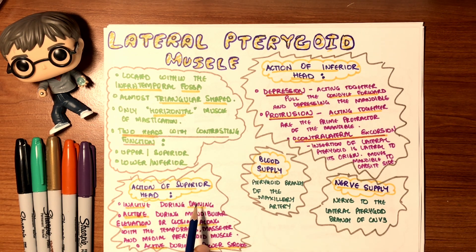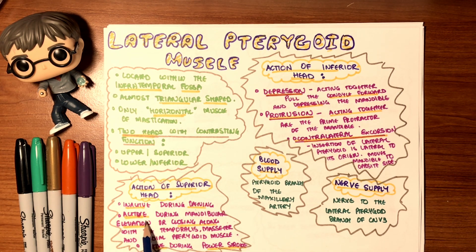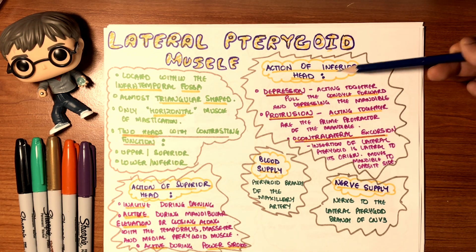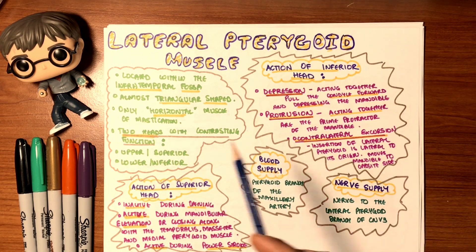The superior head is inactive during opening but active during mandibular elevation, working with temporalis, masseter, and medial pterygoid to close the mandible. It is active during power strokes — every time you chew something hard, the superior head of the lateral pterygoid is involved.